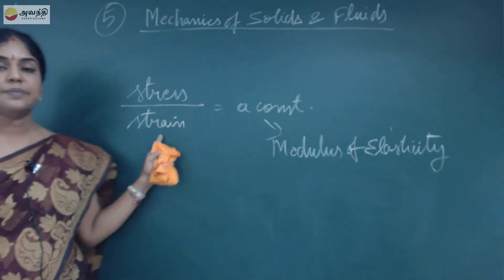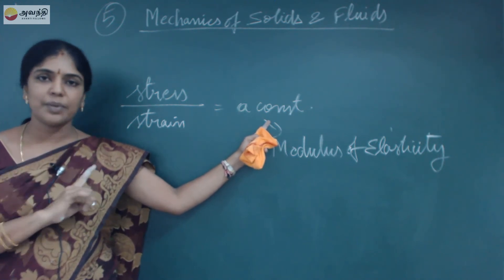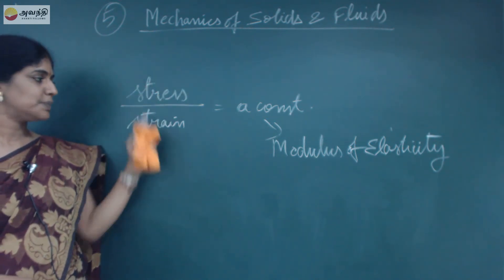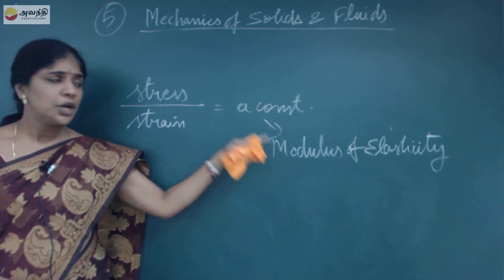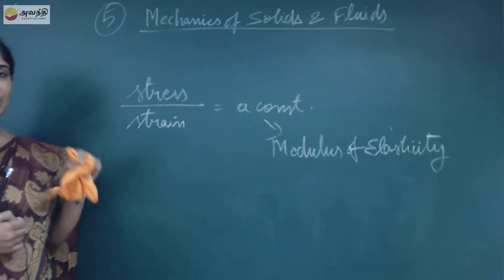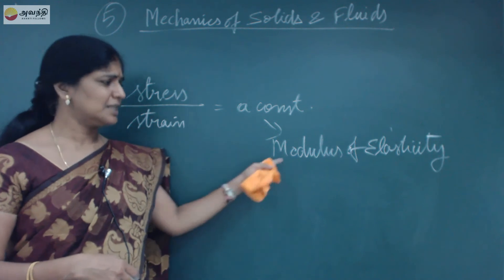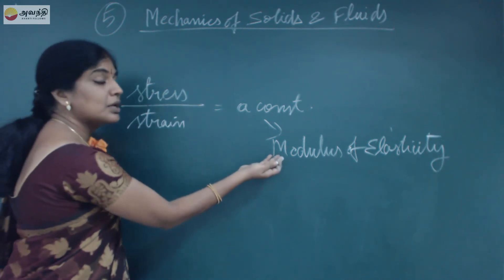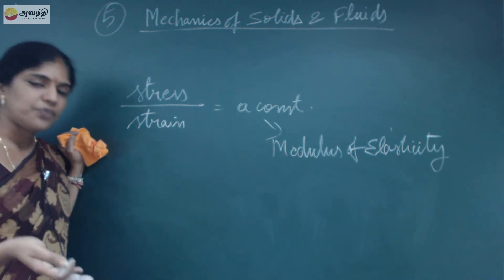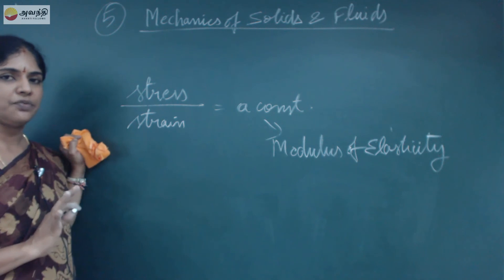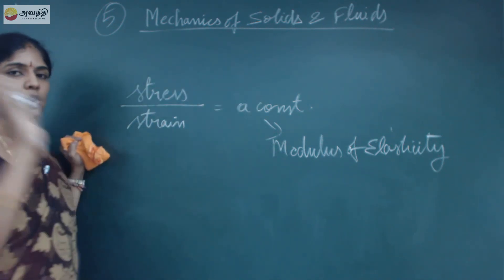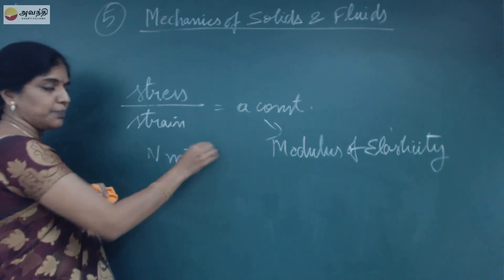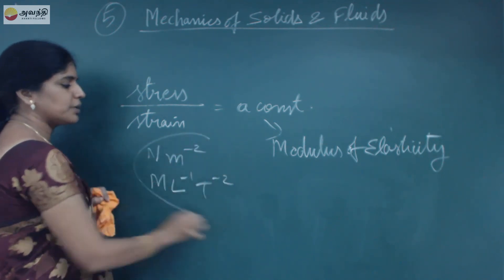Within the elastic limit, the ratio between stress and strain is a constant, and that constant is the modulus of elasticity. So what is the unit for modulus of elasticity? Since strain has no unit, the unit for modulus of elasticity is the same as that of stress — Newton per meter square — and the dimensional formula is also the same: ML⁻¹T⁻².